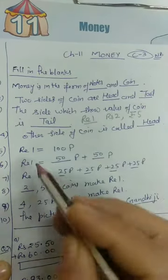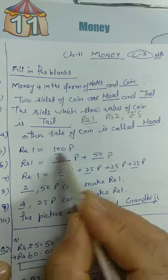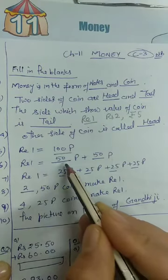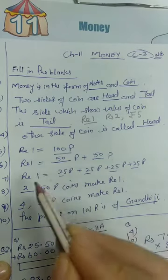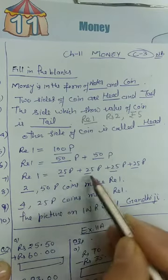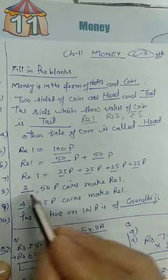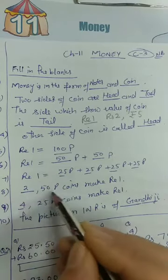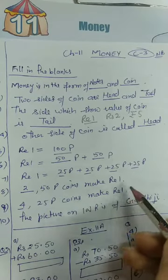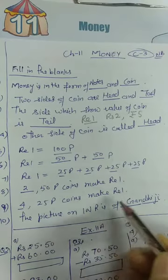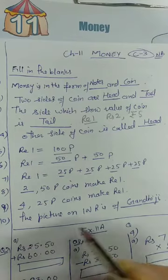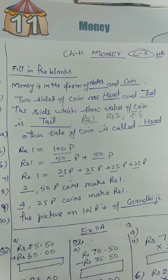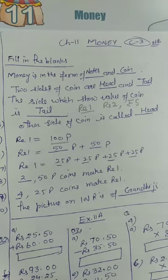One rupee is equal to 100 paise. If we divide one rupee into two parts, it is 50 paise plus 50 paise. Four 25-paise coins also make one rupee. So: 2 fifty-paise coins make one rupee, and 4 twenty-five-paise coins make one rupee. The picture on Indian rupee notes is of Gandhiji.